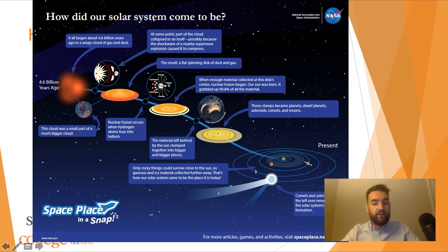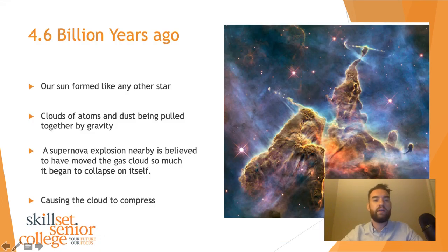Comets and asteroids are the leftover remains of the solar system's formation. When you see shooting stars at night, this is bits of space rock burning up in our atmosphere. Comets are really important. Some scientists believe that's actually how we got our water here on Earth was that the Earth was bombarded with comets that were covered in ice that melted and formed our oceans. 4.6 billion years ago, our sun formed just like any other star. The clouds of atoms and dust being pulled together by gravity and a supernova explosion nearby is believed to have moved the gas cloud so much that it began to collapse in on itself.